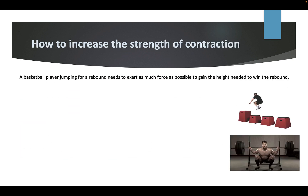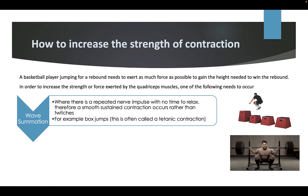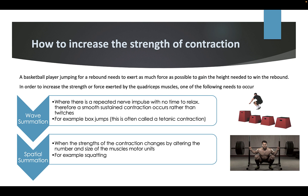How to increase the strength of the contraction. A basketball player jumping for a rebound needs to exert as much force as possible. In order to increase the strength or force exerted by the quadricep muscles, one of the following needs to occur: wave summation — where there is a repeated nerve impulse with no time to relax, therefore a smooth sustained contraction occurs rather than twitches, e.g. box jumps; or spatial summation — when the strength of the contraction changes by altering the number and sizes of the muscle motor units, e.g. squatting.